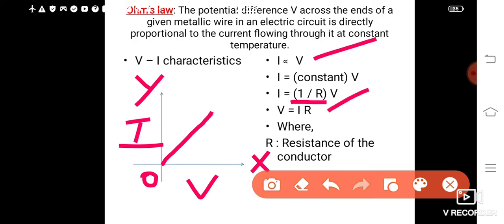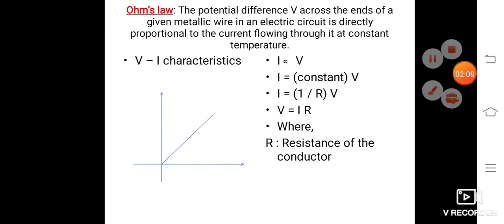Where R is the resistance of the conductor. This one, V is equal to IR, became the mathematical expression of Ohm's law. Resistance was a new property which was introduced here. So what is resistance?